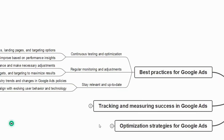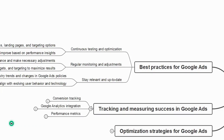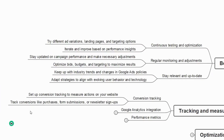Now let us understand tracking and measuring success in Google Ads. First is conversion tracking — you can set up conversion tracking to measure actions on your website, such as purchases, form submissions, or newsletter signups. If a user visits your site and makes a purchase, you will be notified that a lead has been converted. You can also see how many people have signed up through your contact form.